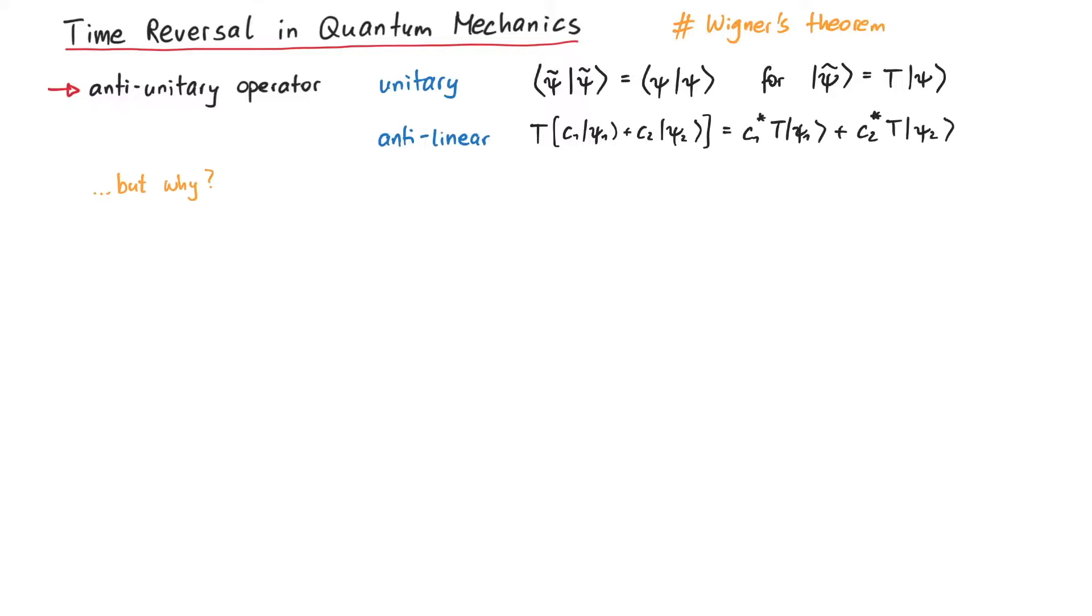But why does the time reversal operator have to be an anti-unitary operator? To see this, let's take a look at the Schrödinger equation. Under a time reversal, psi of t goes to psi tilde of t tilde, where t tilde is simply minus t, and psi tilde could, in principle, be a completely different function than psi.